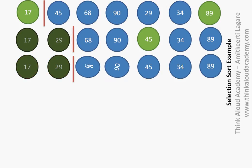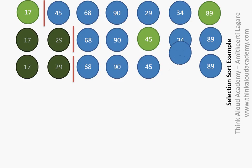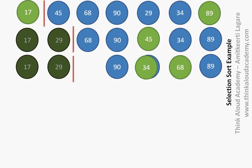In the third iteration, we compare 68 with 90 — 68 is smaller. Then 68 with 45 — 45 is smaller. Then 45 with 34 — 34 is smaller. And 34 with 89 — 34 is still smaller. So by the end of the third iteration, we have figured out 34 is the smallest. We replace the third element with 34, so 34 is in its place. We have now sorted three elements.